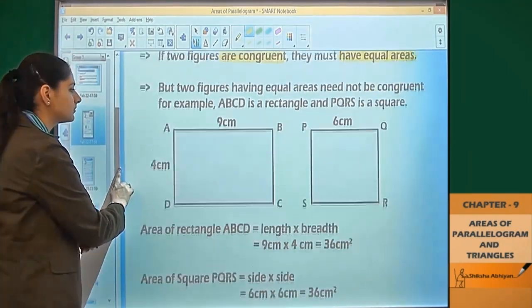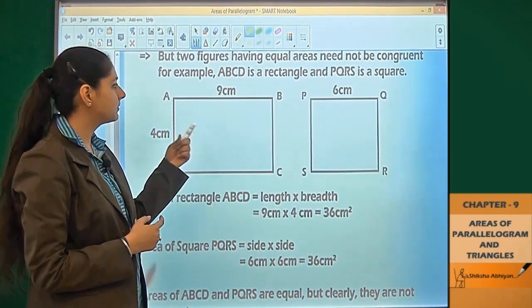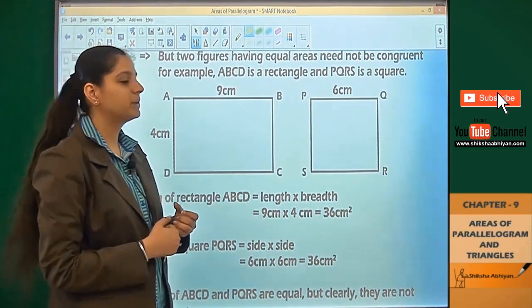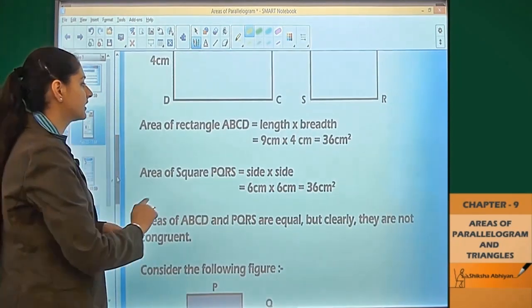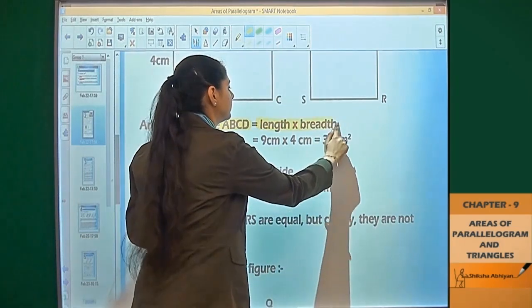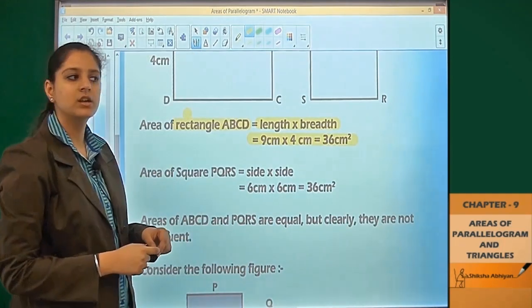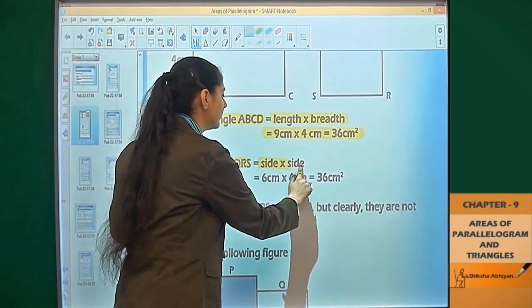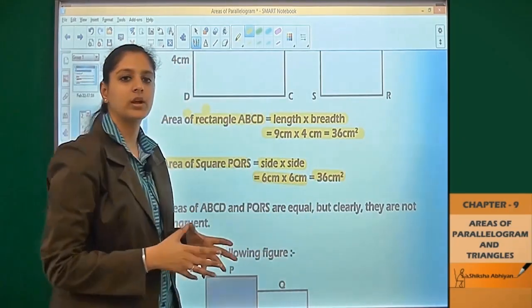We have a rectangle ABCD and a square PQRS. Rectangle ABCD has area equals length times breadth, which is 9 cm times 4 cm equals 36 cm squared. Area of square PQRS is side times side, which is 6 cm times 6 cm equals 36 cm squared.